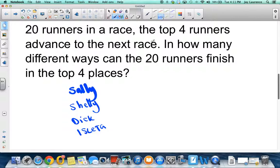Now, all four of these runners get to go on to the next race, right? Let's change the order, and let's go Shelly, and then Aelita, and then Sally, and then finally Dick. When I change the order, did I get the same result?